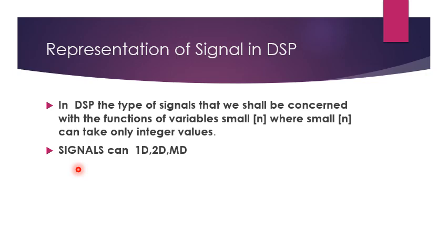In DSP, the type of signals we shall be concerned with are functions of the variable n, where n can take only integer values — for example, minus 15, 0, or plus 15. Nothing like 13.5 is permitted, because time is discretized. Values between integers are not allowed.